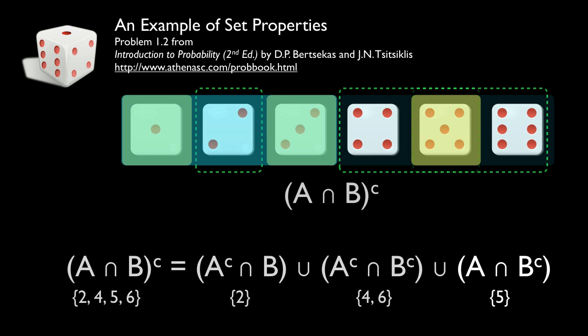So now, the complement of the intersection of A with B was the set of outcomes two, four, five, six. On the right side, the intersection of the complement of A with B is two; the intersection of the complement of A with the complement of B is four, six; and the intersection of A with the complement of B is five. Taking the union of those three sets gives us two, four, six, five — the same four elements from our original calculation. This simple example using a six-sided die shows how we can verify an important relationship of set algebra for intersections and unions of sets.